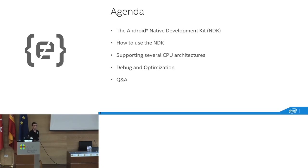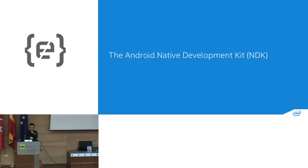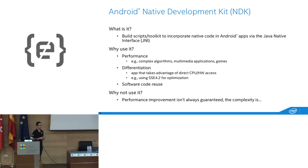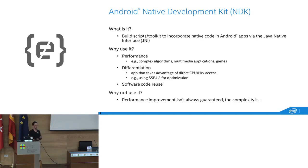I'll talk about the NDK: how to use it, how to properly support all the CPU architectures you can target, how to debug and optimize your NDK code, and we'll have some Q&A at the end. The NDK is a package of scripts and toolkits that allows you to compile C, C++, and assembly to native libraries that will run on Android through the JNI — the Java Native Interface.